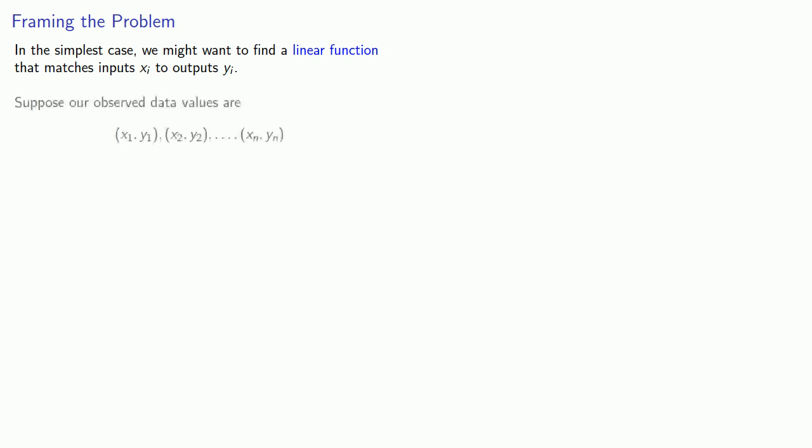So let's try to set up this problem. In the simplest case, we might want to find a linear function that matches inputs xi to outputs yi. Suppose our observed data values are a set of ordered pairs.